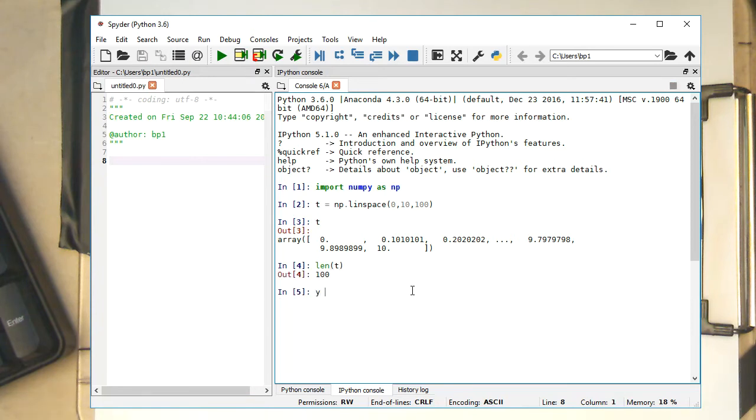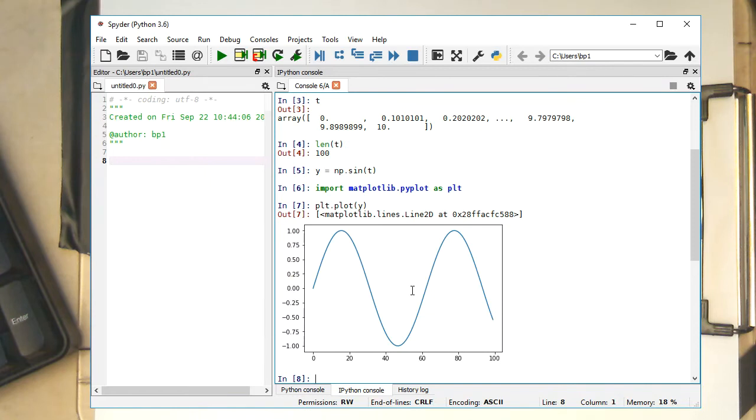Okay, so now we can calculate the sine out of this. So y equals numpy sine of t. And now we would like to plot this. So we need to import also our matplotlib.pyplot. And we just abbreviate this as plt, to make our life easier. So then we can do plt plot of y. And here we go. So here we've got the sine wave, with some hundred samples.